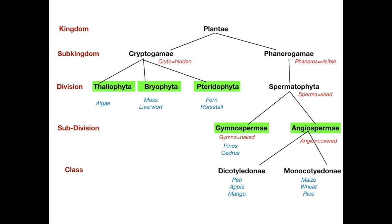In angiosperms the seed is covered within a fruit. Angiosperms are also called flowering plants because only plants which bear fruit also bear flowers. Angiosperms are further classified into monocots (Monocotyledoneae) and dicots (Dicotyledoneae). Examples of monocots are maize, rice, and wheat. Examples of dicot plants are pulses, peas, apple, and mango.